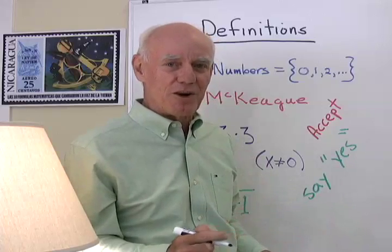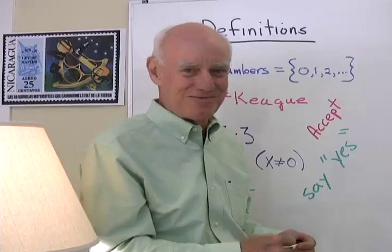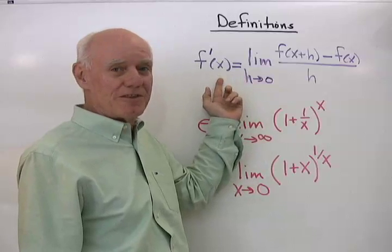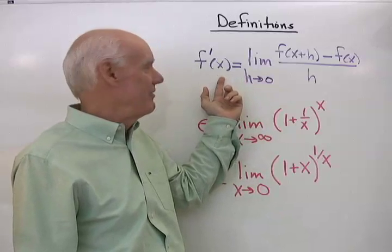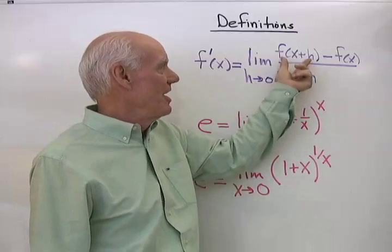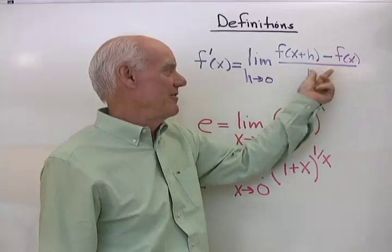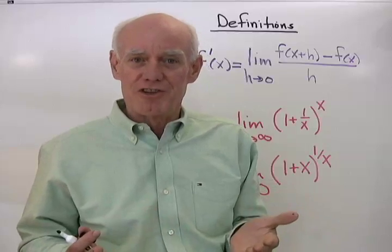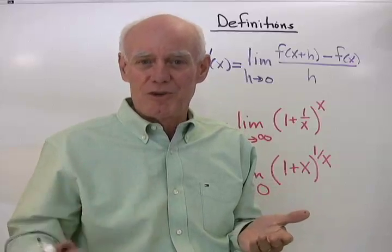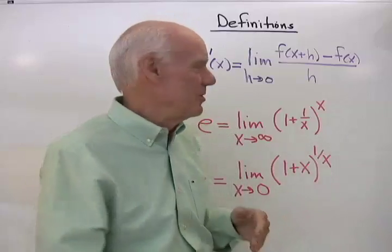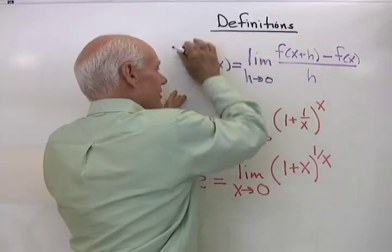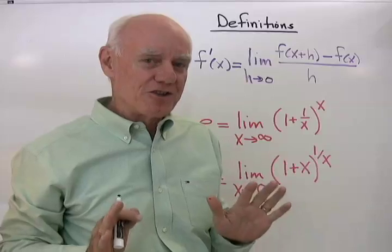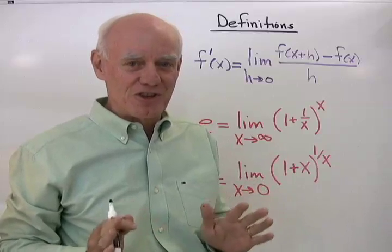Let me go to the next board and show you a couple more definitions. Here's the definition for the derivative: the derivative of the function y equals f of x is the limit as h goes to 0 of f of x plus h minus f of x, all over h. There's no easier way to say this — this is the definition of the derivative, that thing you've been working with in the last couple of chapters. So when it comes to derivatives, that definition gets even more complicated. When you look at it like that, it's not too hard to take the definition for this new number e.